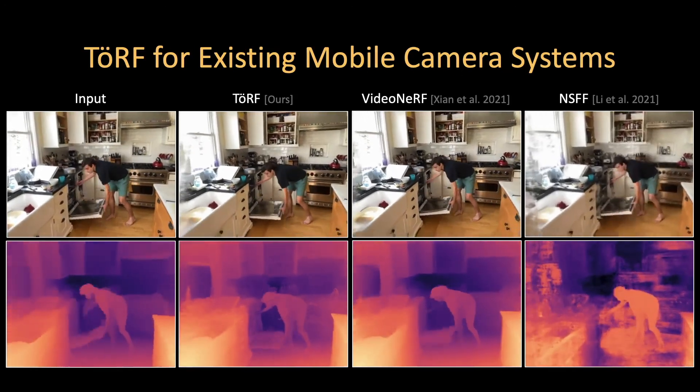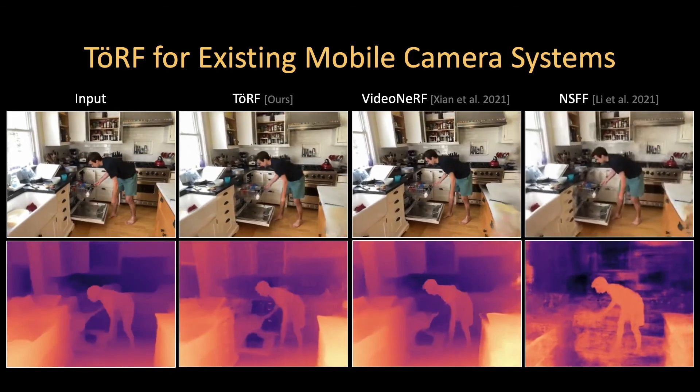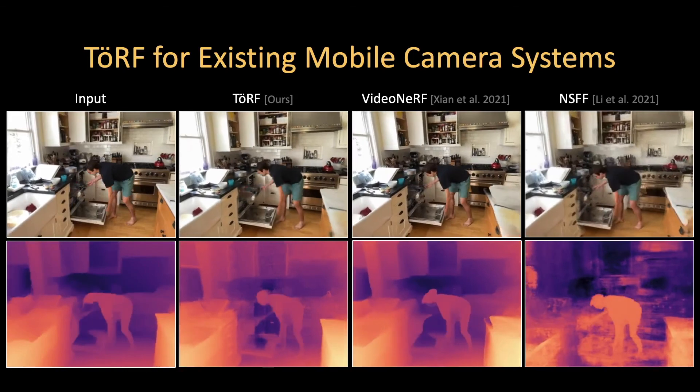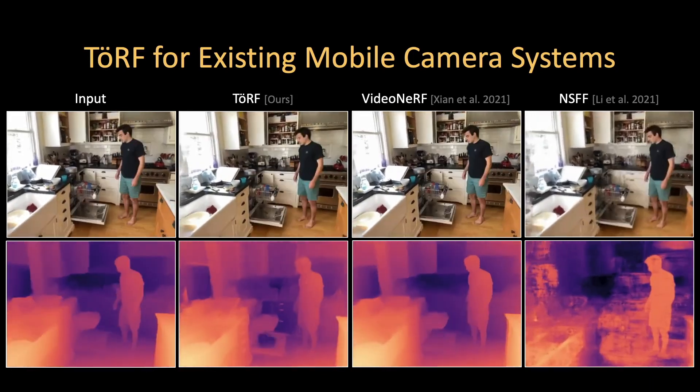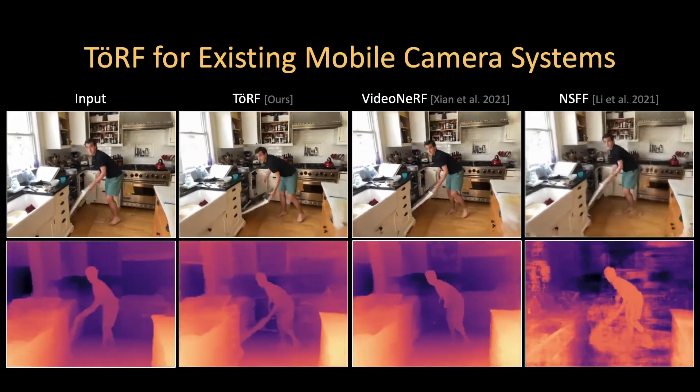As a final result, our method can be applied to already processed depth measurements. Here, we use the iPhone. Even though the raw time-of-flight measurements are not available, we convert depth back to a phasor representation for reconstruction. This helps to refine depth and reduce some of the larger flickering artifacts, though the method would improve given access to the time-of-flight images.